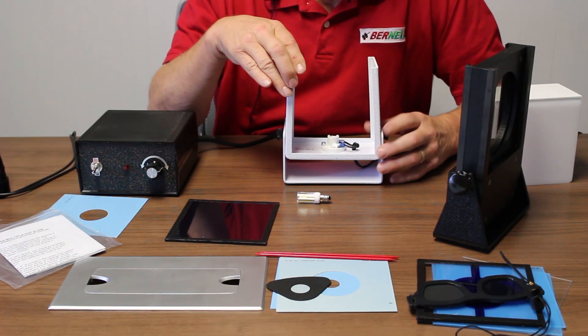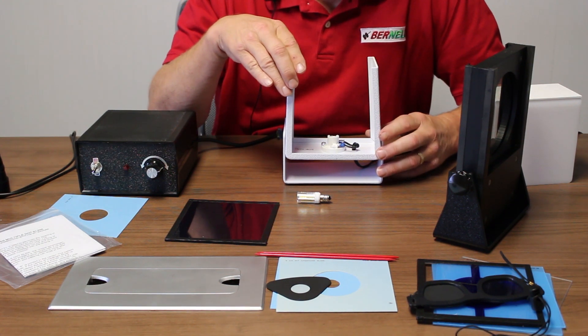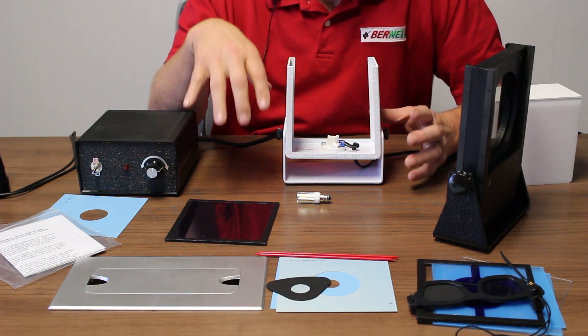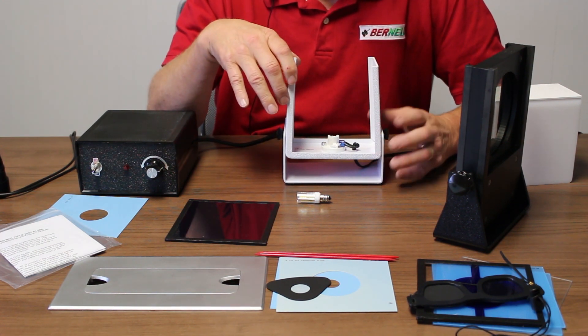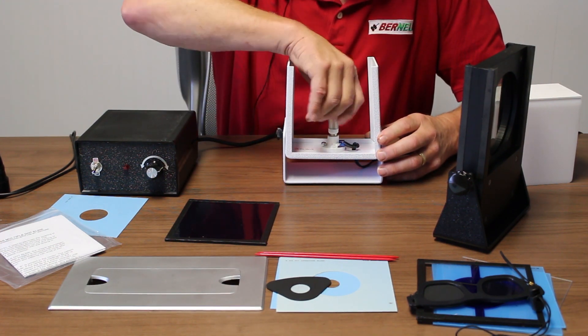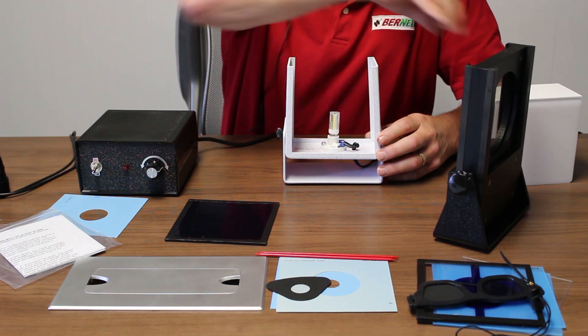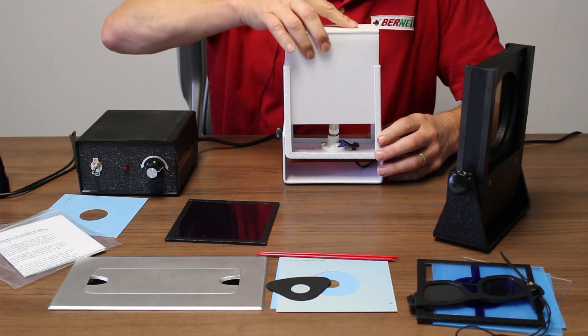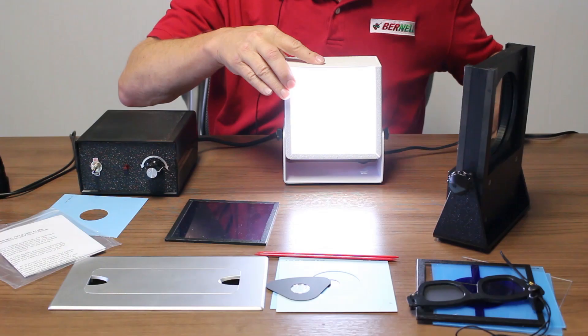Your MIT comes very disassembled so it's packed and shipped safely. One of the first things you want to do is put your light bulb. We now use an LED light bulb. We put that into the assembly so that our light source is ready to go.